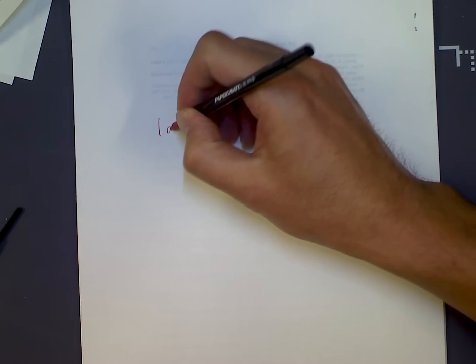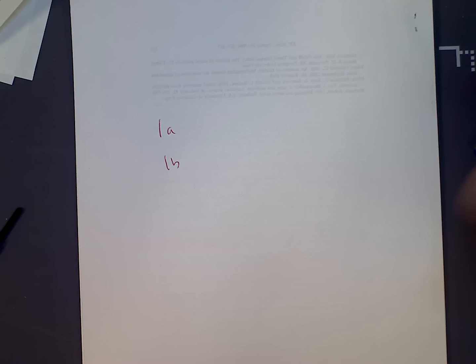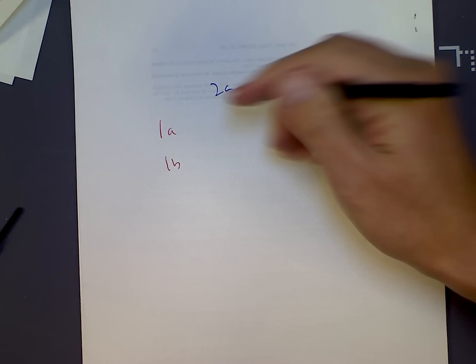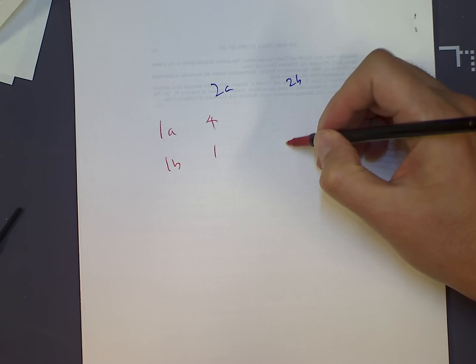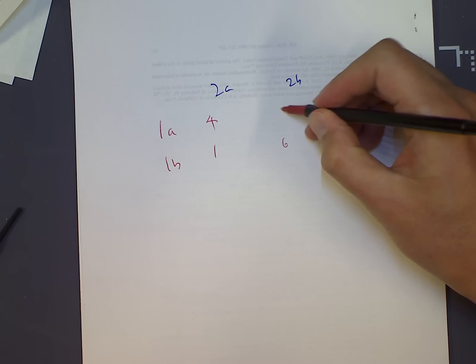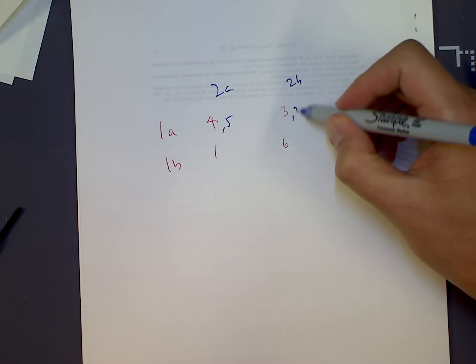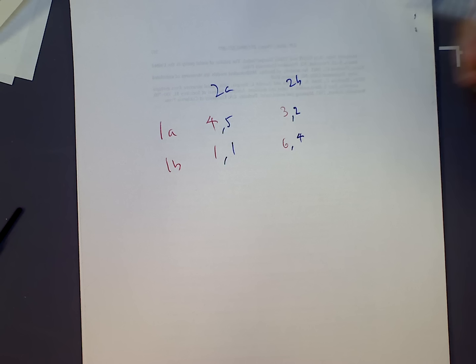So just one question about the mixed Nash equilibrium. Let's take an example: strategies 0, 1, A, and B. And I have a payoff matrix with something like 4, 1, 6, 3, 2 — something like that.